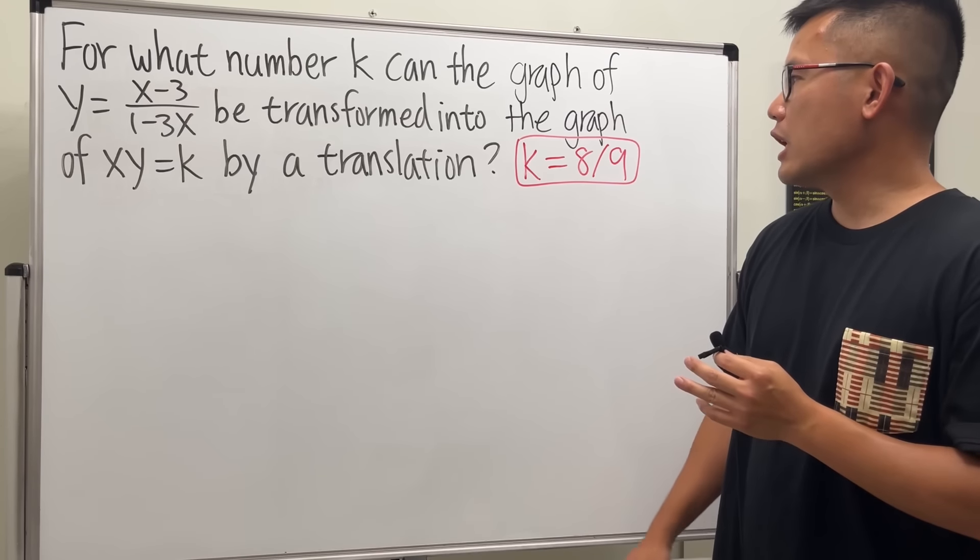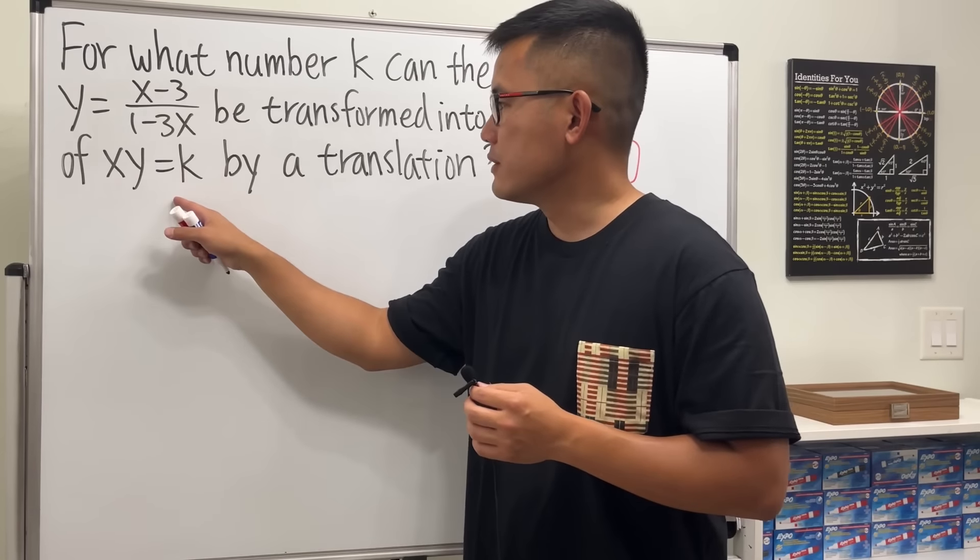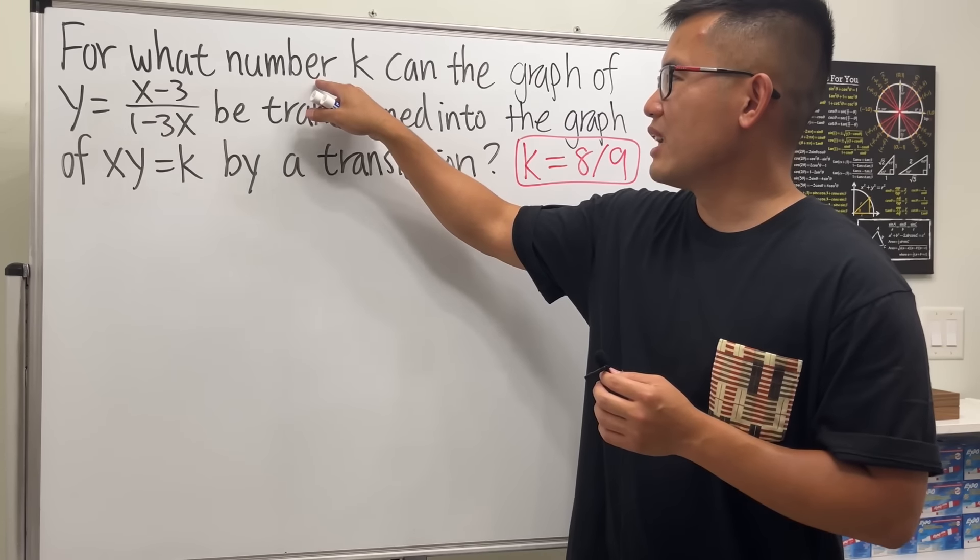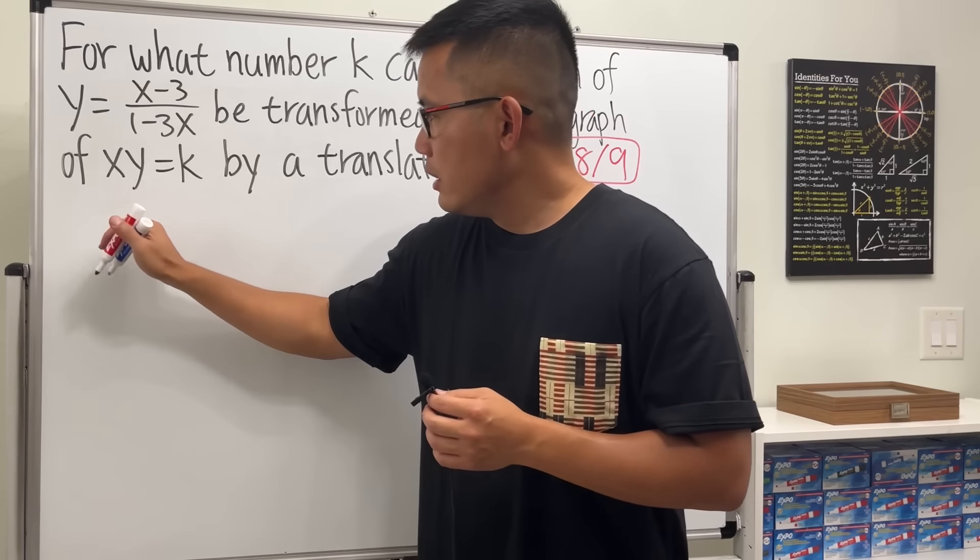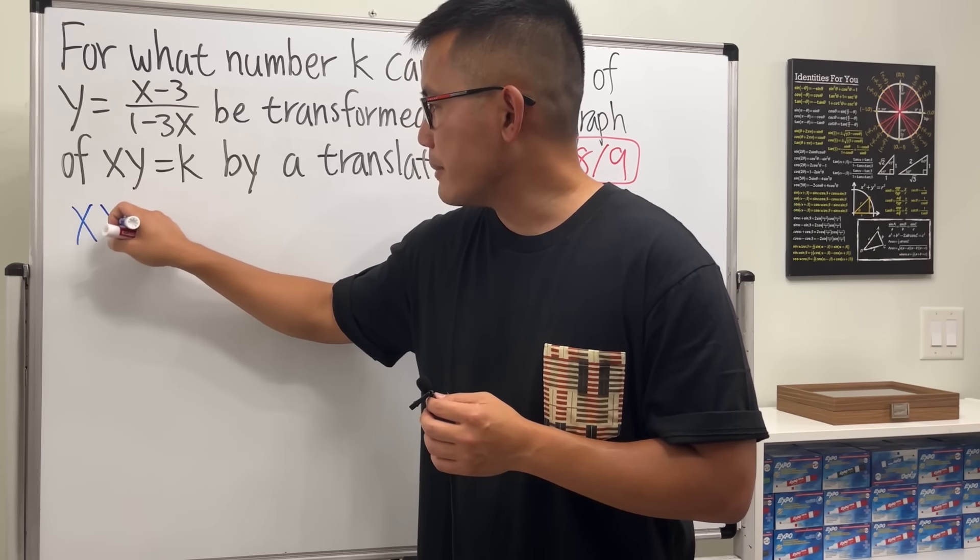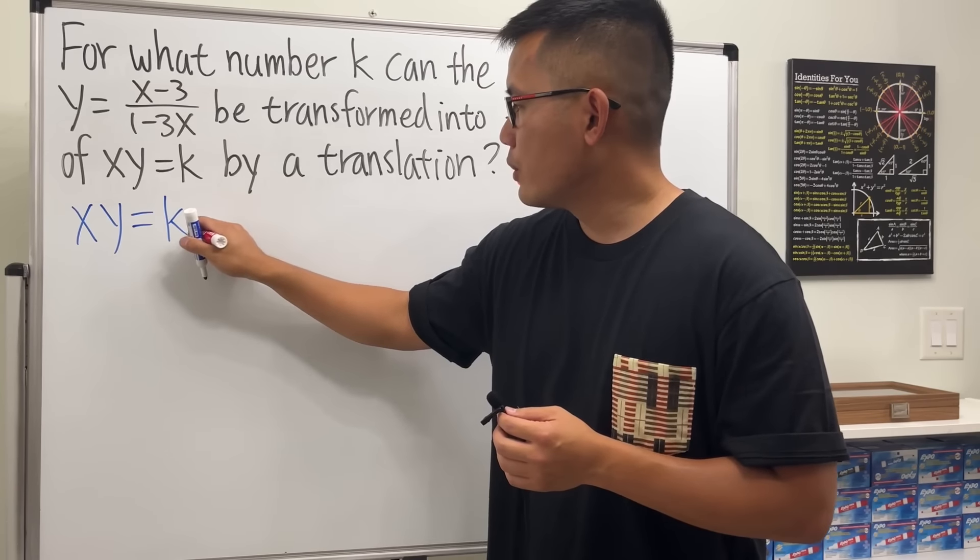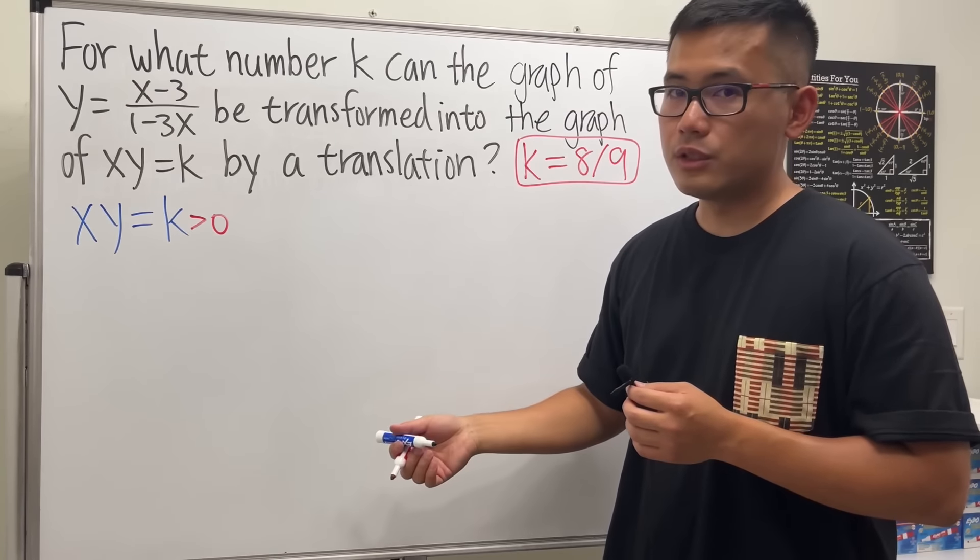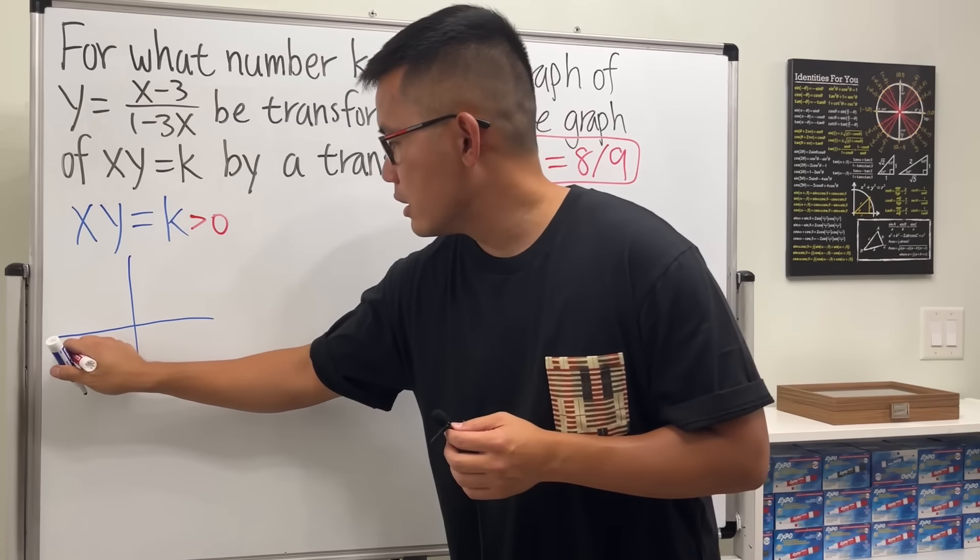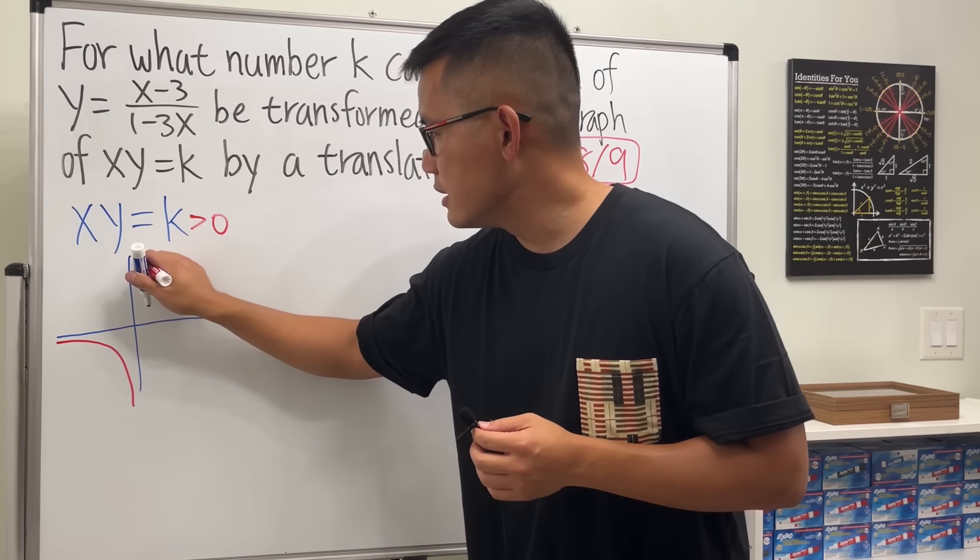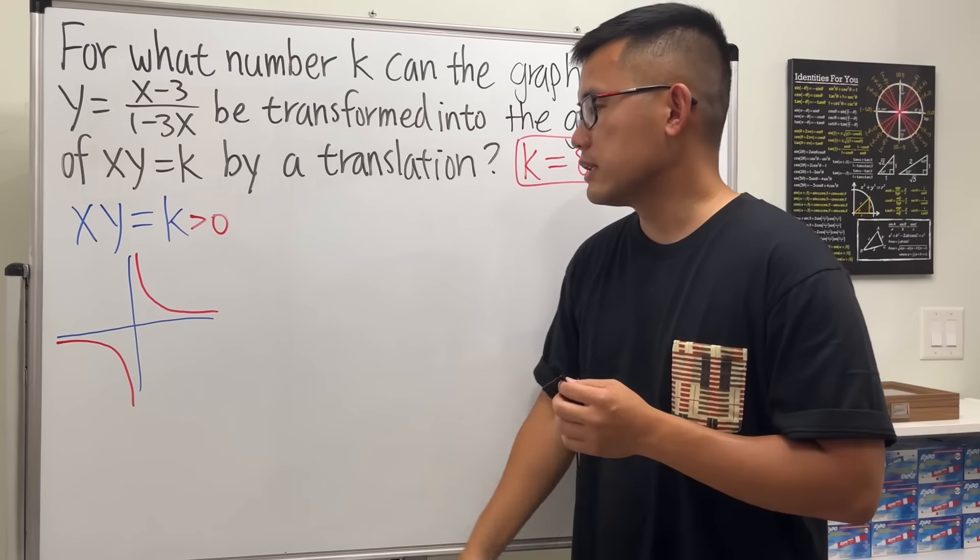So here we are talking about the graph for this and that. Let's take a look at the graph of this first. Especially we are trying to find out a number k and put it here, right? So if we have the equation x times y equals k, and let's say k is just a positive number, so let me just indicate that it's greater than 0. Then this is actually just going to be a typical hyperbola graph, like this, like that. And you can just imagine k equals 1. So that's the idea and you get this.